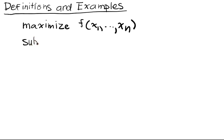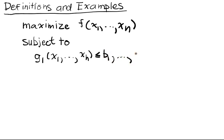and we're going to have two general types of constraints. So we're going to have g1 of x1 up to xn is less than or equal to b1, all the way up to gk of x1 up to xn is less than or equal to bk.